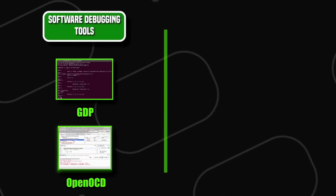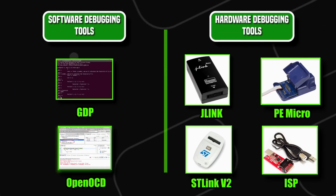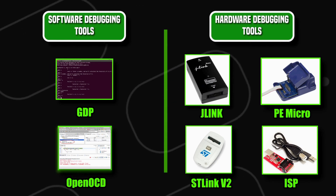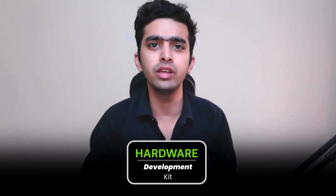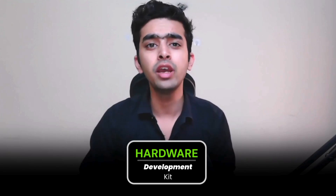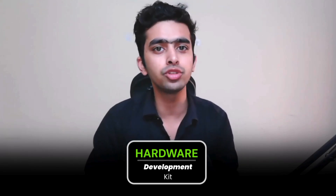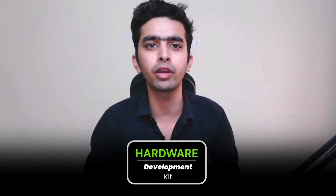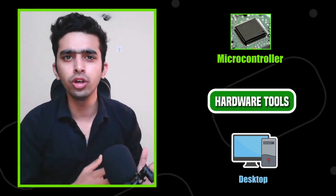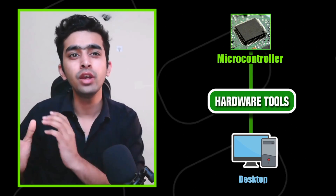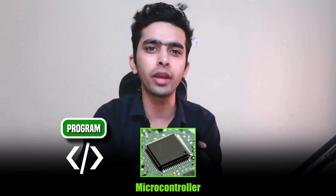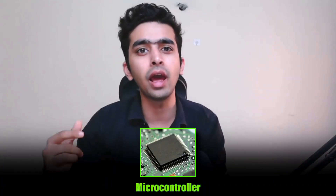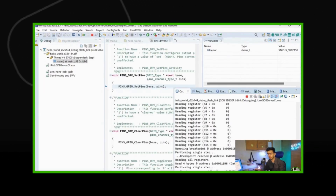Software debugging tools include GDB and OpenOCD, while hardware debugging tools include J-Link, PE Micro, ST-Link V2, or ISP programmers. As we are in the hardware development kit series, we will stick to hardware debugging technology and cover software debugging technology in the software development kit part of the microcontroller series. These hardware tools act as an interface for microcontrollers to communicate with the host desktop or PC where we write the program, so as to flash this program into the microcontroller, debug it line by line, and monitor the microcontroller operation accordingly.